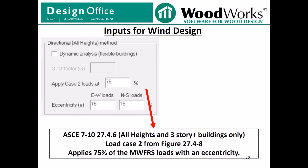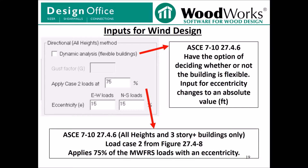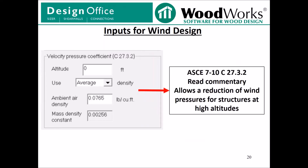The following inputs are only related to the directional all heights method and correspond with load case 2 from figure 27.4-8. The load case applies 75% of the basic wind speed pressure with an eccentricity applied. The inputs give you options to change the percentage of load as well as the eccentricity if desired. The method is only applicable to structures of three or more stories. ASCE 7-10 commentary for section 27.4.6 gives you the option to decide whether the building can be considered flexible. Toggling the dynamic analysis checkbox changes the eccentricity to an absolute value that you can modify. Additionally, ASCE 7-10 allows a reduction in wind pressure for structures at high altitudes; reading commentary C27.3.2 is recommended for guidance on the appropriate inputs.